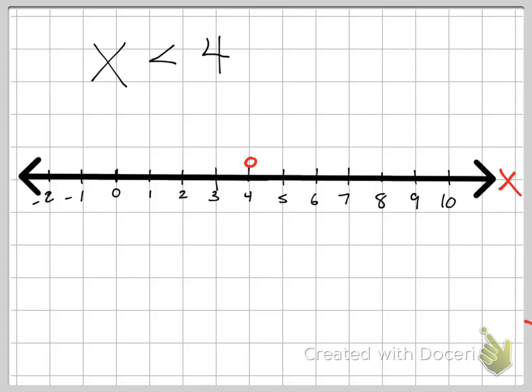So the open circle indicates that the value does not exist at that point. And then what I like to look at is the direction of the sign matches the direction of the arrow that we're going to go towards. So we're going to go in the left direction, and we are done. So that's the graph of x is less than 4.